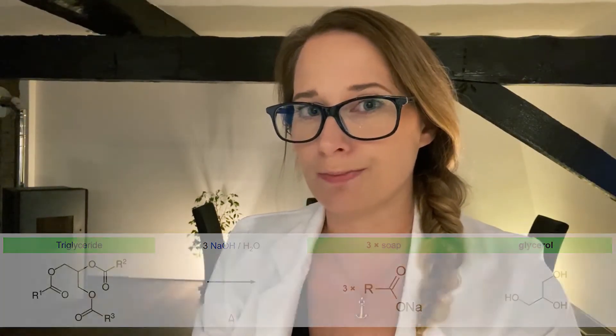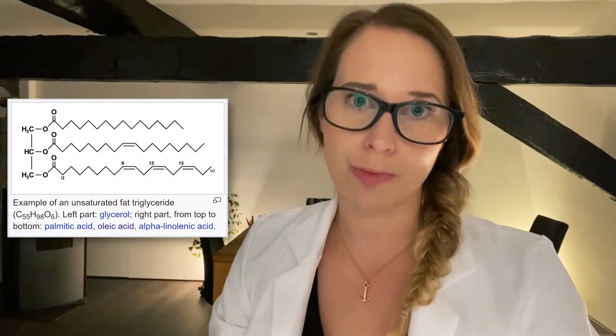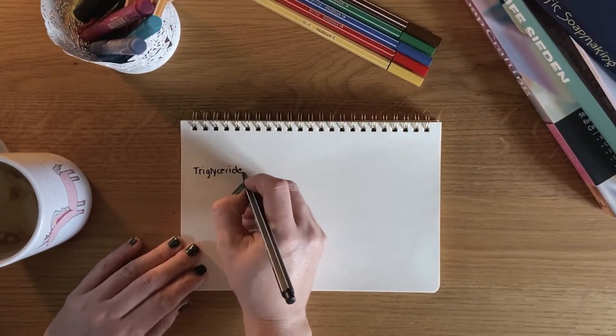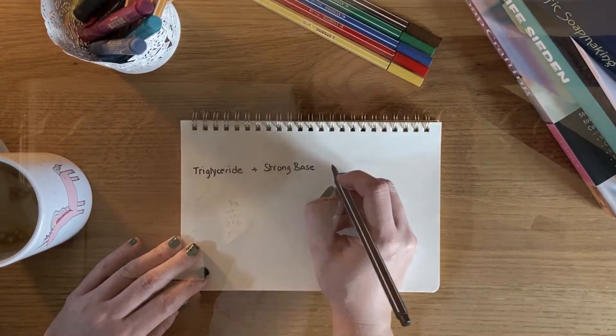Let's have a deeper look. What is oil? Oil consists of different fatty acids, and these fatty acids are chemically bound to glycerol. This molecule is called a triglyceride. Next we need a strong base, and this can be sodium hydroxide, potassium hydroxide, or a mixture of both. When you use sodium hydroxide, you will get a solid soap bar. Potassium hydroxide is used for liquid soap.